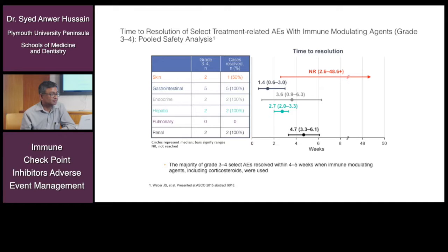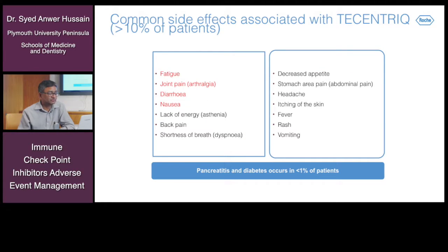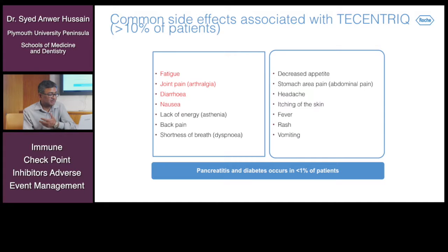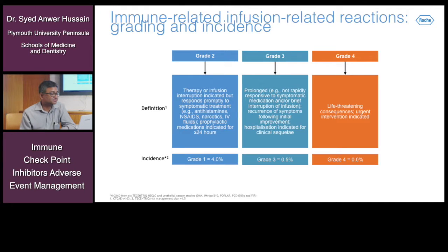Renal toxicity time to resolution is approximately 4.7 weeks. Common side effects associated with Tecentriq occurring in greater than 10% of patients include fatigue, joint pain, diarrhea, nausea, lack of energy, back pain, shortness of breath, decreased appetite, abdominal pain, headache, itching of the skin, fever, rash, and vomiting. Pancreatitis and diabetes occur in less than 1% of patients.